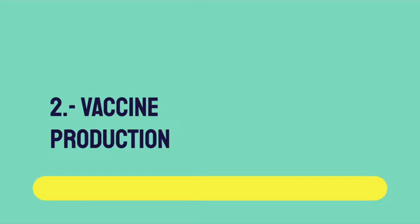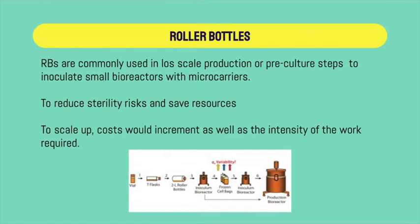Once we have defined the immunity process, we have to start producing the vaccine. For vaccine production, one option is roller bottles. Roller bottles are commonly used in low-scale production or pre-culture steps to inoculate a small bioreactor with microcarriers. They represent a relatively low risk, reducing sterility risks and saving resources. To scale up, it would be necessary to increment costs and also the intensity of the work required.